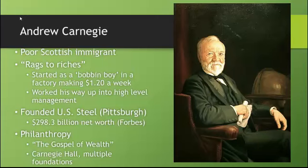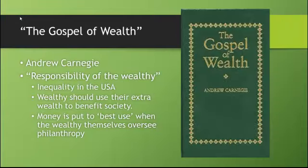Another one of these industrialists was Andrew Carnegie. He started out as a poor Scottish immigrant — the quintessential rags-to-riches story. He started as a bobbin boy at a very young age making $1.20 a week, worked his way up to high-level management, and eventually founded the U.S. Steel Company, becoming one of the richest men in America. He also pioneered a new idea of wealth and created a tradition of philanthropy, giving away a lot of his money to charitable causes. He built Carnegie Hall, multiple foundations, and wrote a book called The Gospel of Wealth. In it, Carnegie said it is the responsibility of the wealthy to address inequality in the United States, and that wealthy people should personally oversee the philanthropy they do, using their business skills.